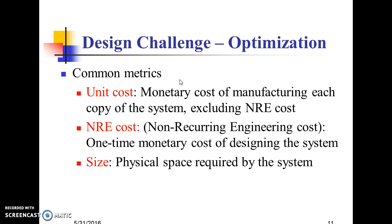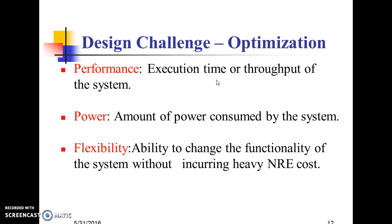Common Metrics: Unit Cost is the monetary cost of manufacturing each copy of the system, excluding NRE cost. NRE (Non-Recurring Engineering) Cost is the one-time monetary cost of designing the system. Size is the physical space required by the system. Performance is the execution time or throughput of the system. Power is the amount of power consumed. Flexibility is the ability to change functionality without incurring heavy NRE cost.